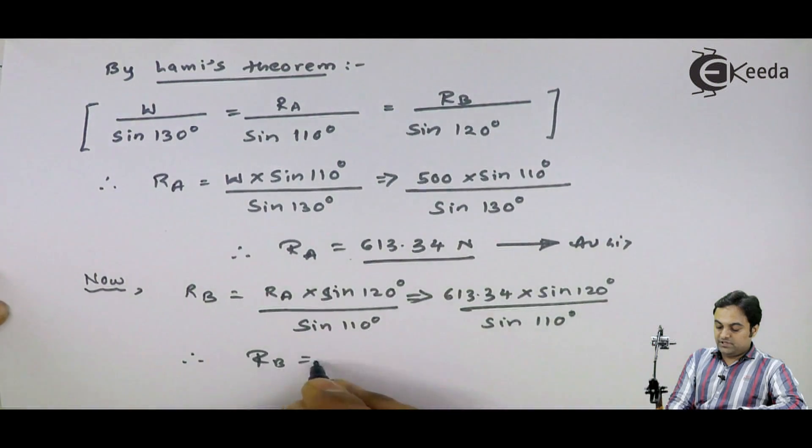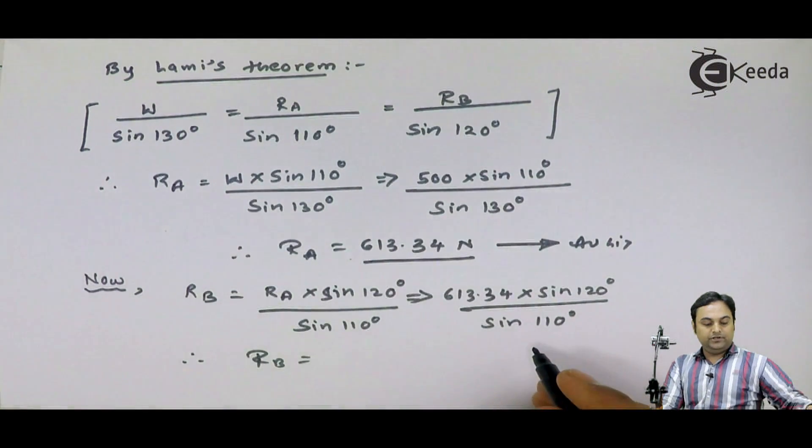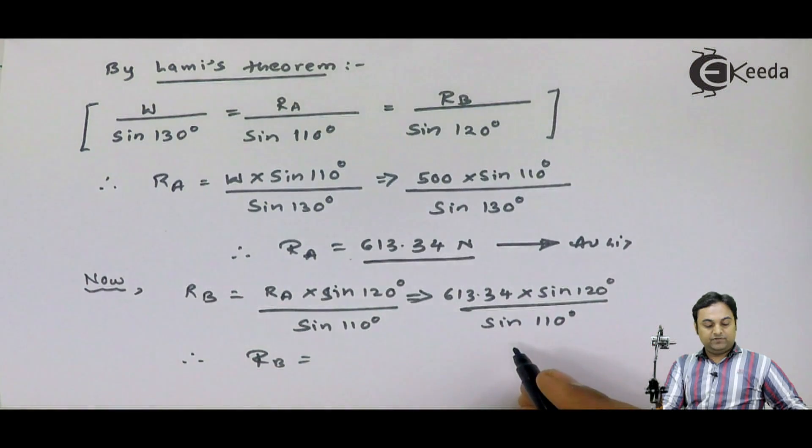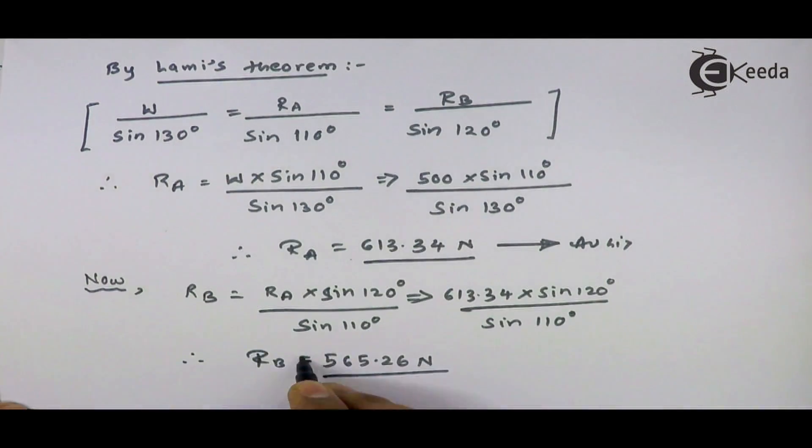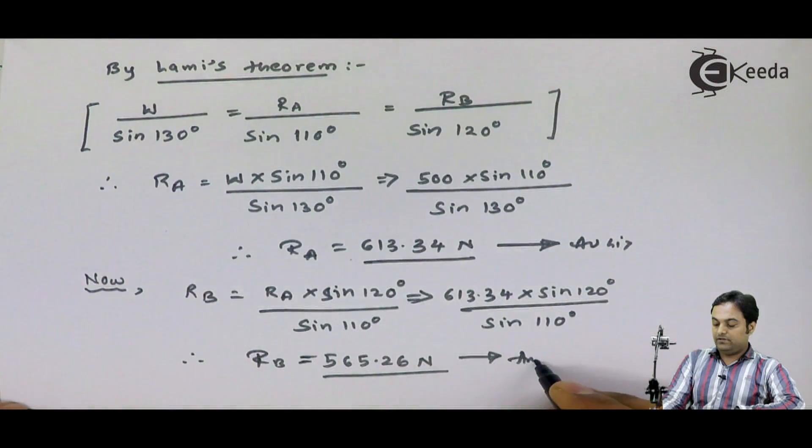RA value is 613.34 into sin 120 degree divided by sin 110 degree. If I calculate all terms carefully in numerator divided by denominator, I will be getting my answer of RB as 565.26 Newton. This is my second answer.